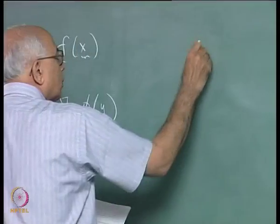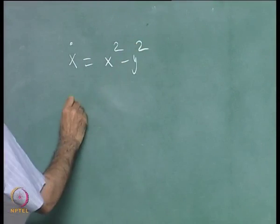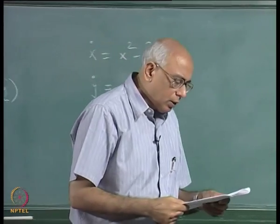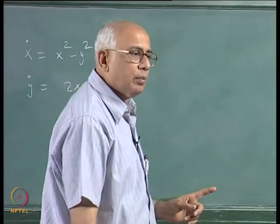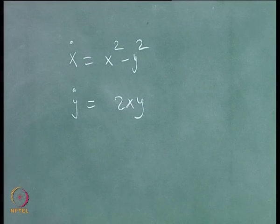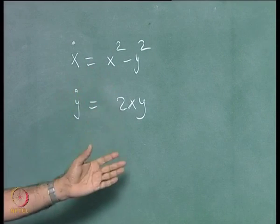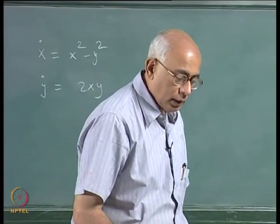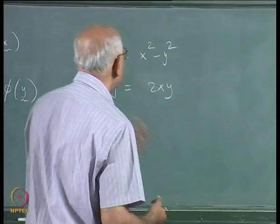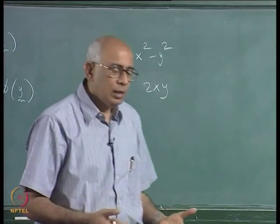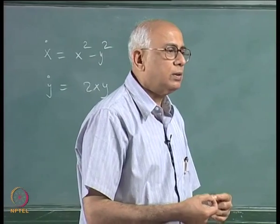Consider the two-dimensional system: ẋ = x² − y², ẏ = 2xy. The proposition that the critical point at the origin is a saddle point is false. A saddle point has winding number −1, but this is a dipole field with winding number 2 — topologically distinct from a saddle point. This is a higher-order critical point that is not even linearizable near the origin; it arises from the coalescence of two simple critical points.